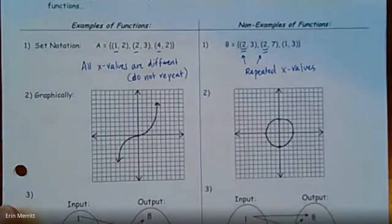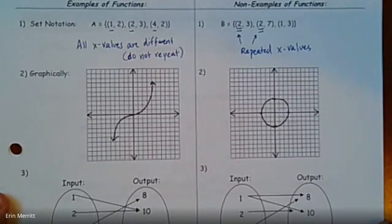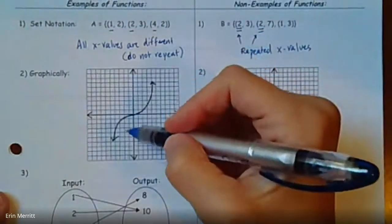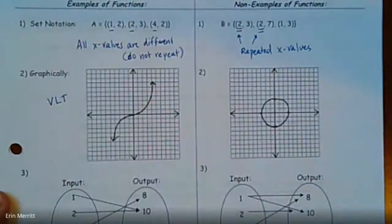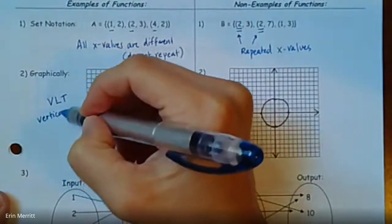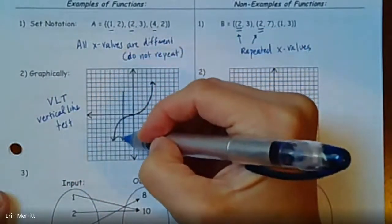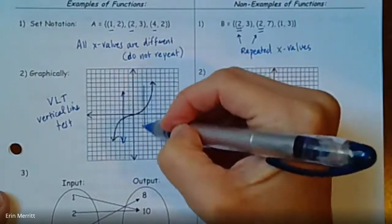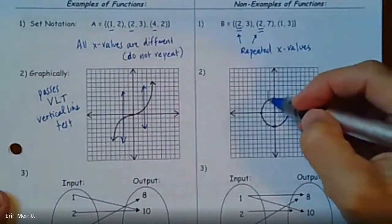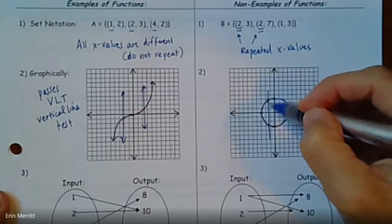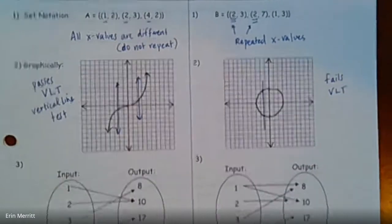Graphically, everybody typically remembers this test. It's the idea there's a way to test to see if something is a function. And it's by drawing a line through the graph in a specific way. So what that is called, sometimes it's abbreviated to the VLT, but it is known as the vertical line test. And if you can draw a vertical line anywhere in the graph, and it only hits the graph one time, then we say it passes the vertical line test. Whereas if you draw a line vertically through, and it hits in more than one spot, like in this case, it hits twice, then we would say it fails the vertical line test.